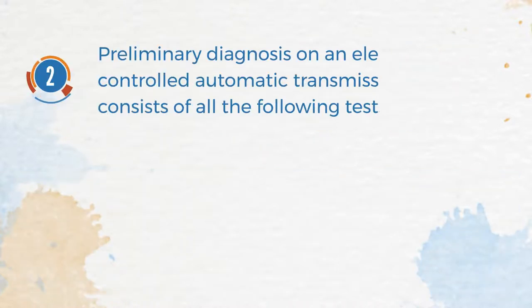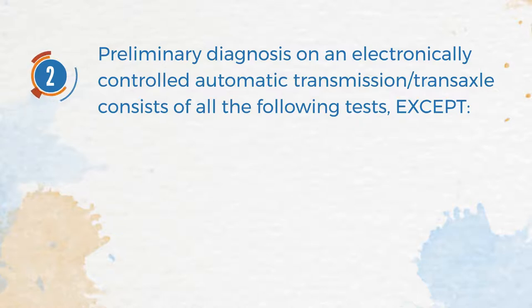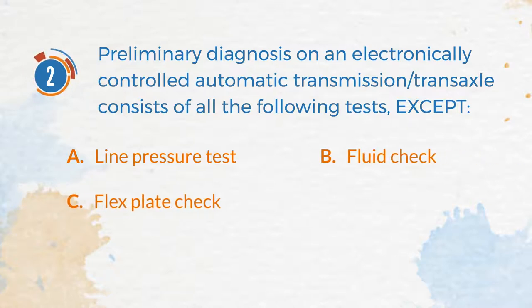Number 2. Preliminary diagnosis on an electronically controlled automatic transmission or transaxle consists of all the following tests, except: A. Line Pressure Test. B. Fluid Check. C. Flex Plate Check. D. Stall Test.